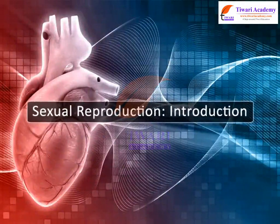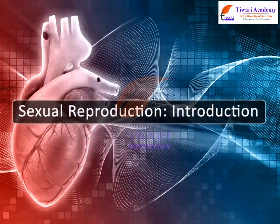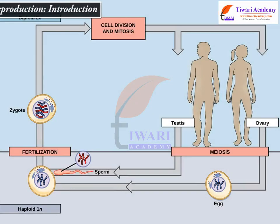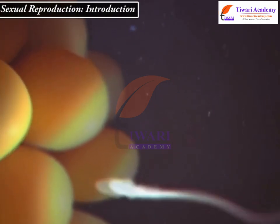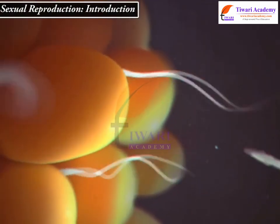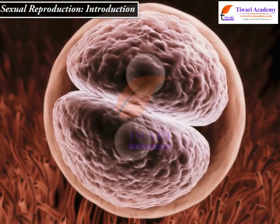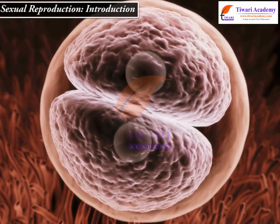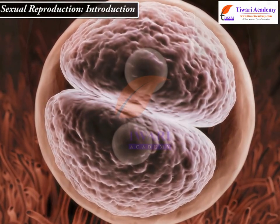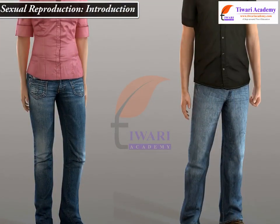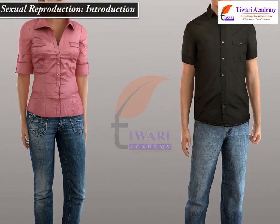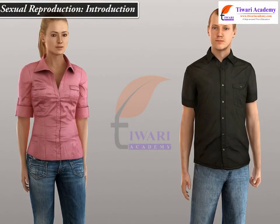Sexual reproduction is commonly found in complex, multicellular organisms. It involves the union of male and female sex cells or gametes to form the zygote, which grows into a new individual. Two different sexes, male and female, take part in the process.